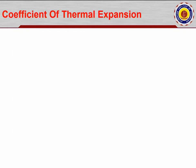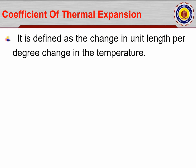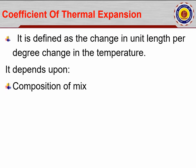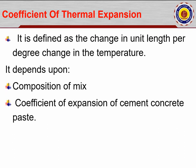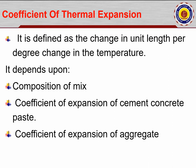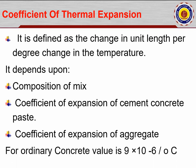The coefficient of thermal expansion is defined as the change in unit length per degree change in temperature. It depends on the composition of the mix and material properties. The coefficient of expansion of cement concrete paste and the coefficient of expansion of the aggregate are both measured in laboratory tests. Elongation properties of aggregates, also studied in concrete technology and soil mechanics, are considered. For ordinary concrete, the value is 9 × 10⁻⁶ per degree centigrade.